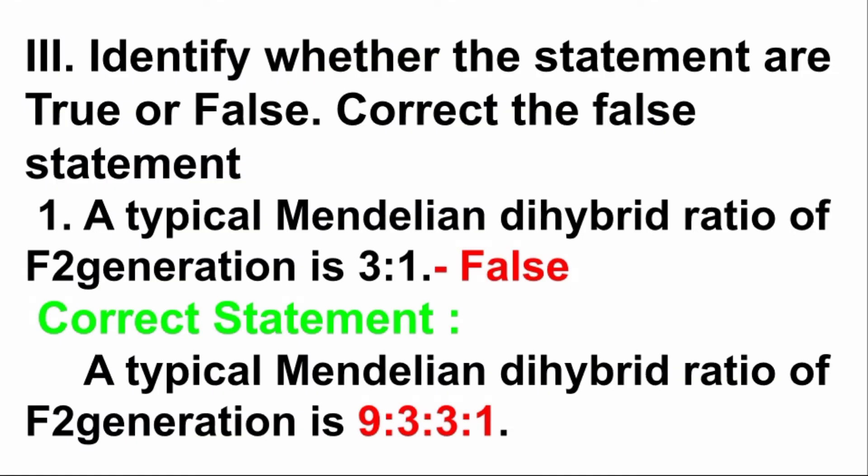Third row: identify whether the statements are true or false, and correct the false statements. First question: a dihybrid ratio of F2 generation is 3:1. Answer is false. The correct statement is: a dihybrid ratio of F2 generation is 9:3:3:1. A monohybrid ratio of F2 generation is 3:1.